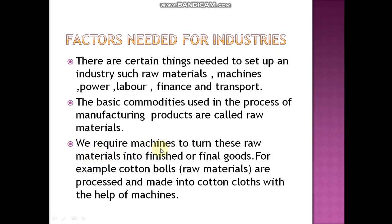The basic commodities used in the process of manufacturing products are called raw materials. We require machines to turn these raw materials into finished goods. For example, cotton ball is a raw material that is processed and made into cotton clothes with the help of machines.